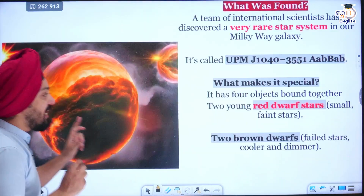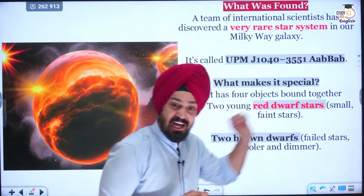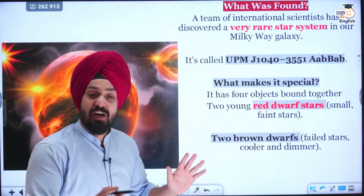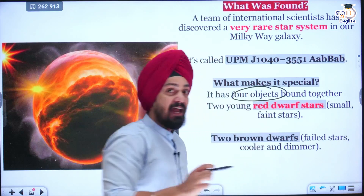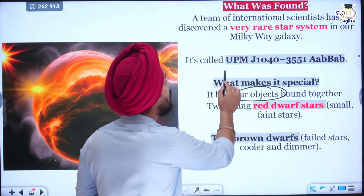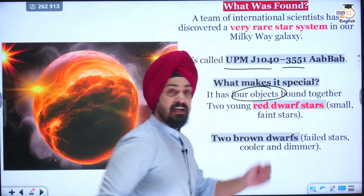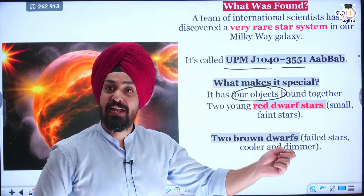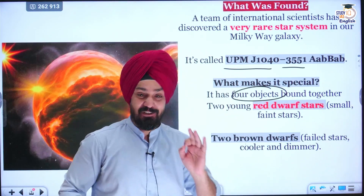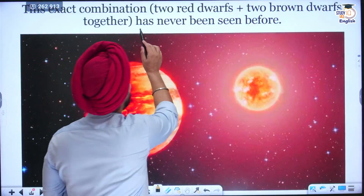What scientists discovered was two red dwarf stars and two brown dwarf stars which were bound together. They named it UPM J1040-3551 AA-BBAB. Very easy to remember! This discovery was very rare — it has never been seen before.